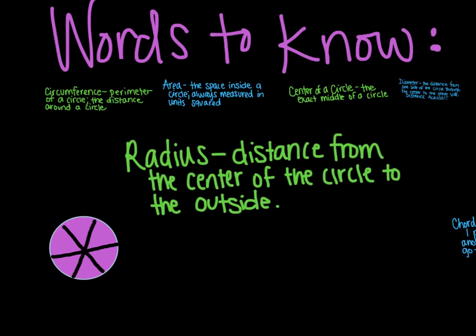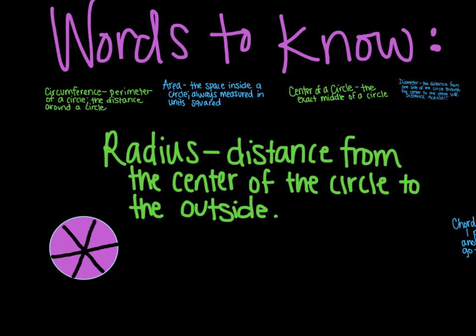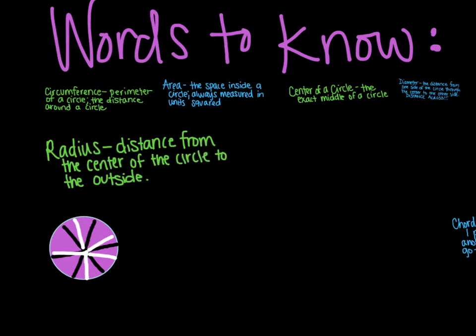Then, we have radius. The radius is the distance from the center of your circle to the outside. So if here's your center, okay, it's going from that center to the outside. And again, that can be many different ones as well. But going from the center to the outside is the radius.